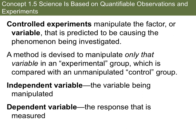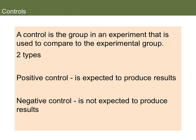What you are manipulating — that factor — is called a variable, and that's what you're basically testing to see if that's what's causing a result. A method is devised to manipulate only that one variable in your experimental group, and you're going to compare it to the unmanipulated control group. When running an experiment, you will have two variables: an independent variable and a dependent variable. The independent variable is the variable that's being manipulated — also called the manipulative variable. The dependent variable is your response variable — what you're going to take data on to get quantitative data. A control is the group you're using to compare. In biology there are two types: a positive control, which is expected to produce results, and a negative control, which is not expected to produce results.